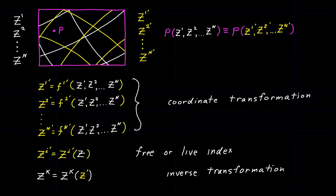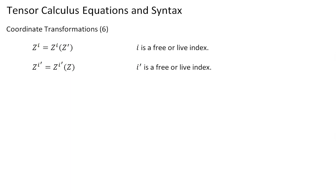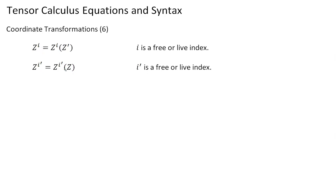What we did in this video was develop the idea of a coordinate transformation. If we know the coordinate values in a Z-prime coordinate system, we can use those as arguments to a set of functions and derive the corresponding coordinate values in the unprimed system. These are coordinate transformations and they're inverses of each other. The other major takeaway is the use of a free or live index — when we have an index like this, it tells us that we're working with multiple expressions at the same time, always the same number of expressions as the number of dimensions in the space we're working with.